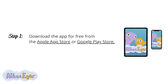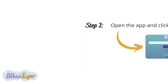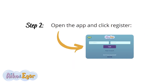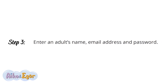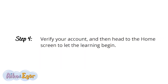Step 1: Download the app for free from the Apple App Store or Google Play Store. Step 2: Open the app and click Register. Step 3: Enter an adult's name, email address, and password. Step 4: Verify your account and then head to the home screen and let the learning begin.